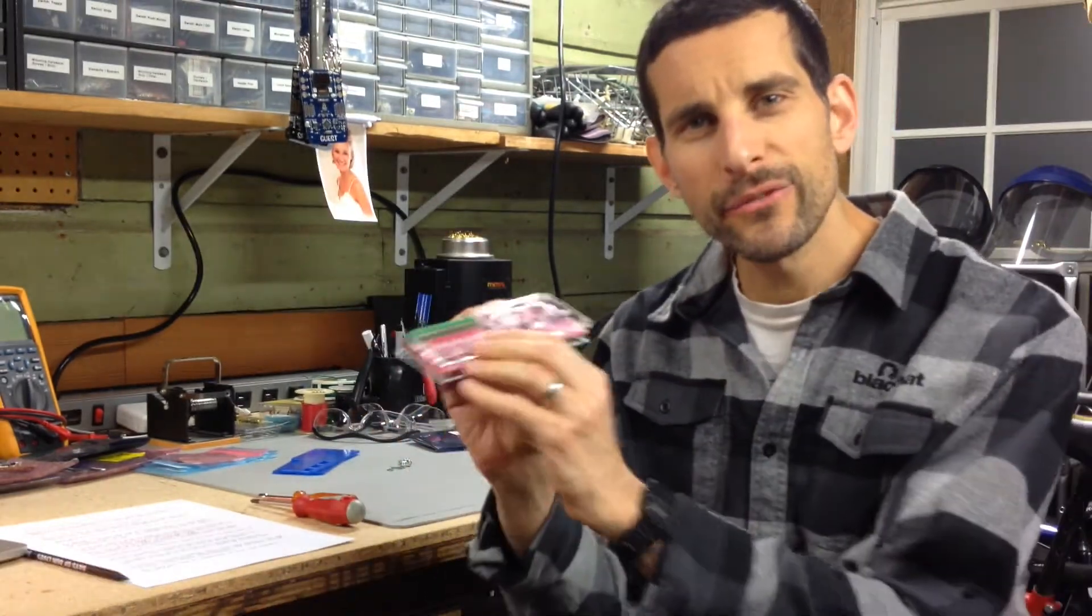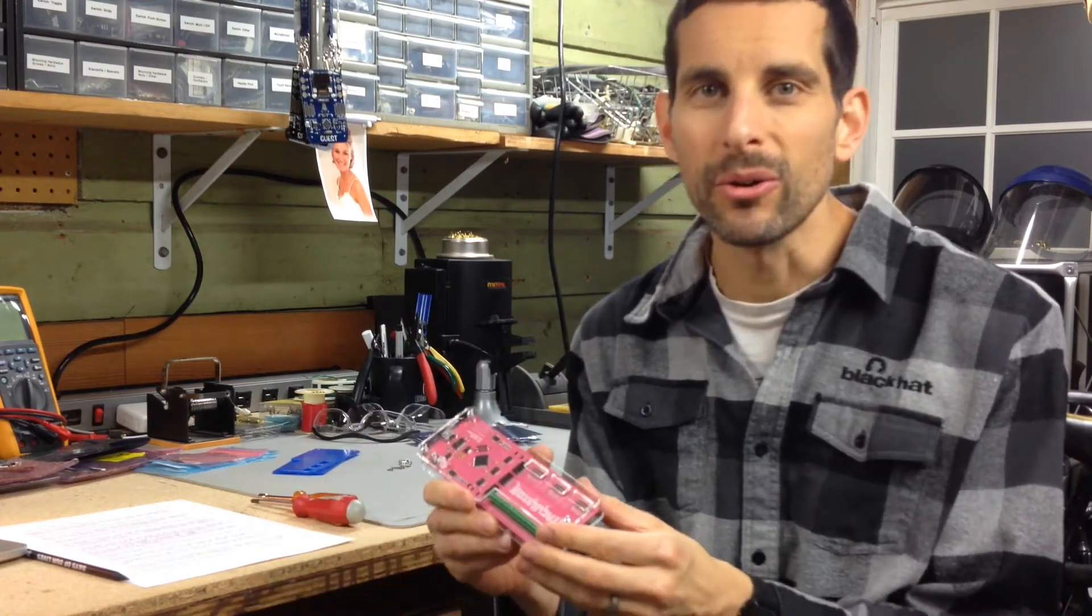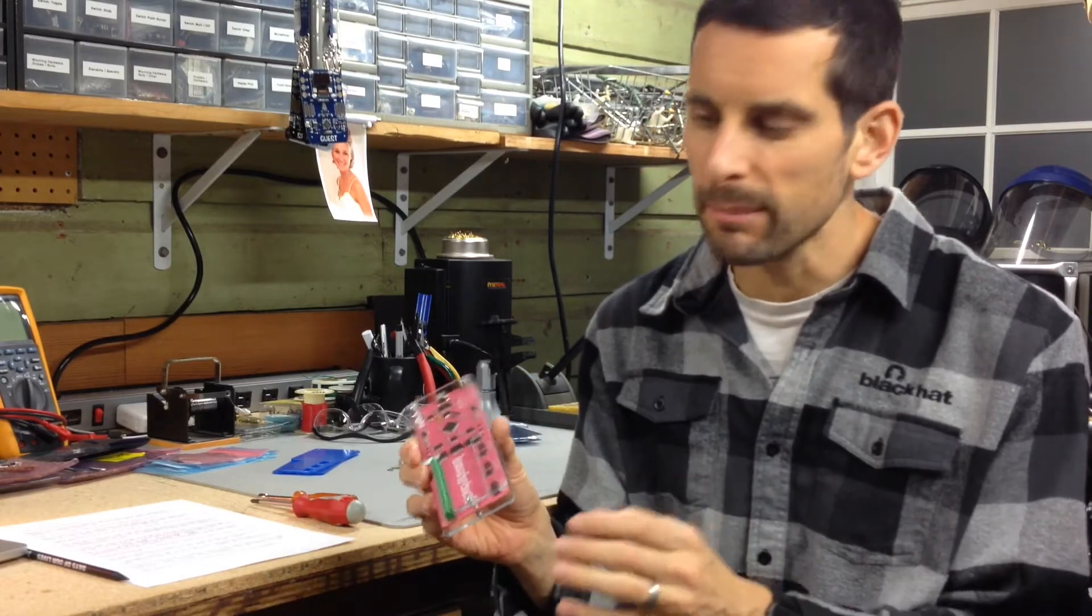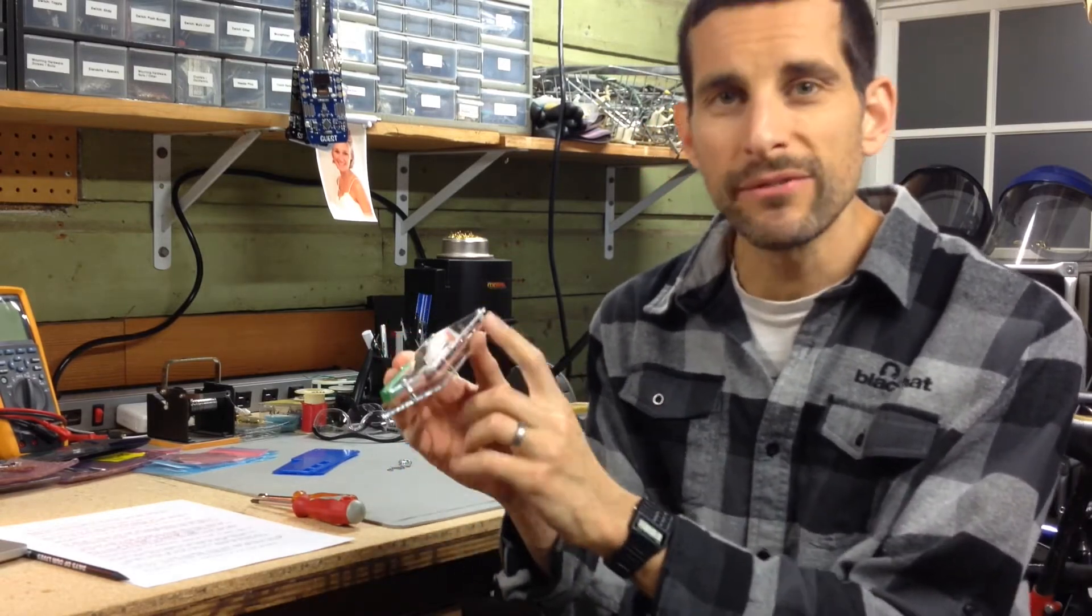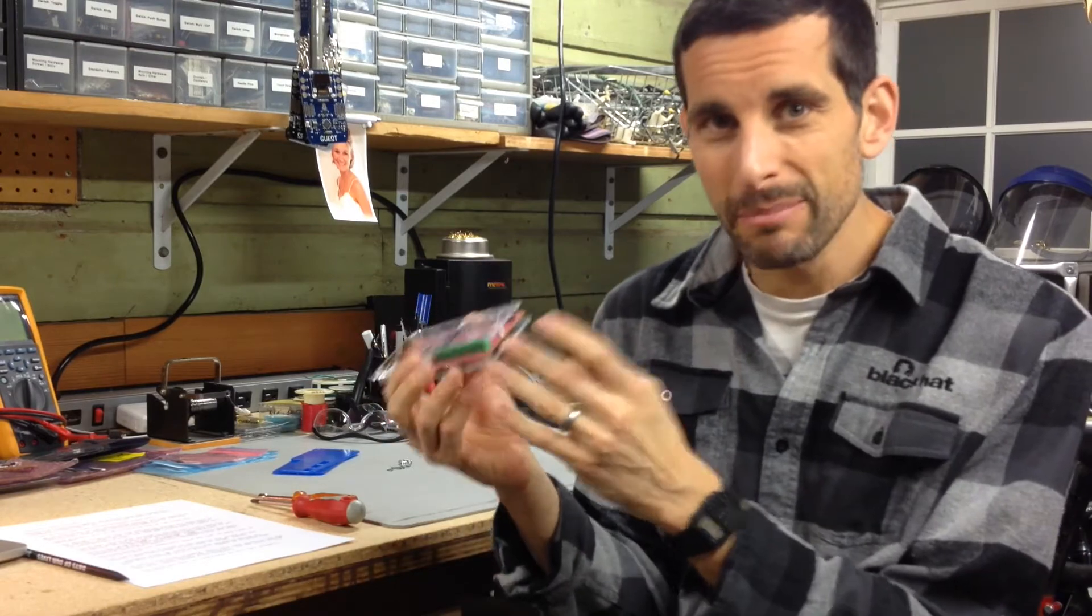All the design files for this case are available on my website if you go to jtagulator.com or grandideastudio.com and search for JTagulator. Everything you need is up there. So the top and bottom 2D files in PDF, SVG, and DXF. That's a lot of acronyms. Also a simple bill of materials.